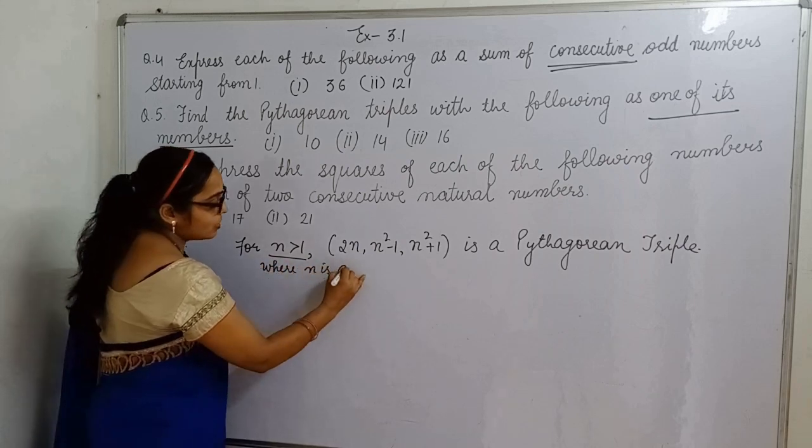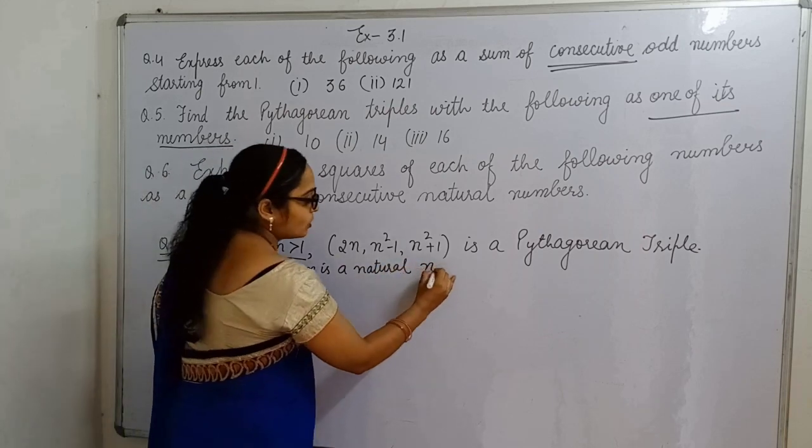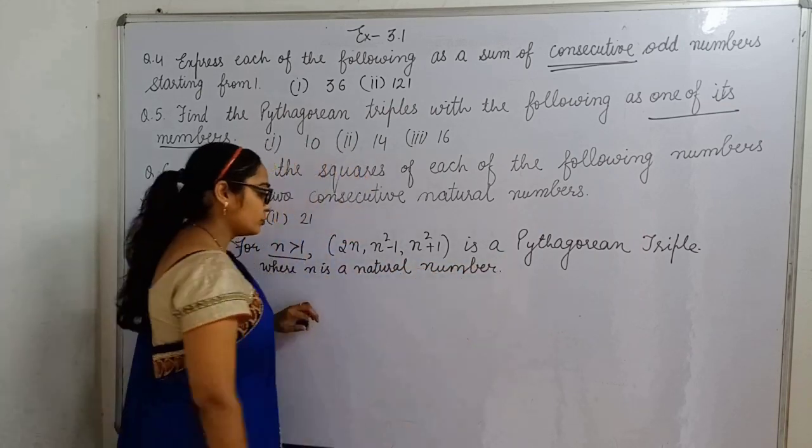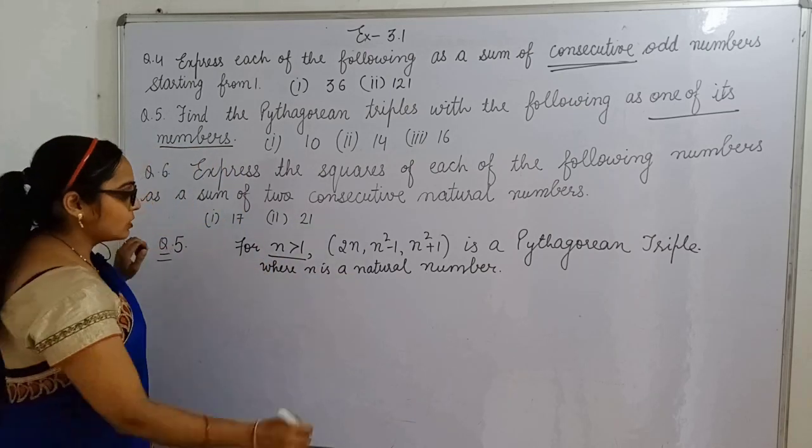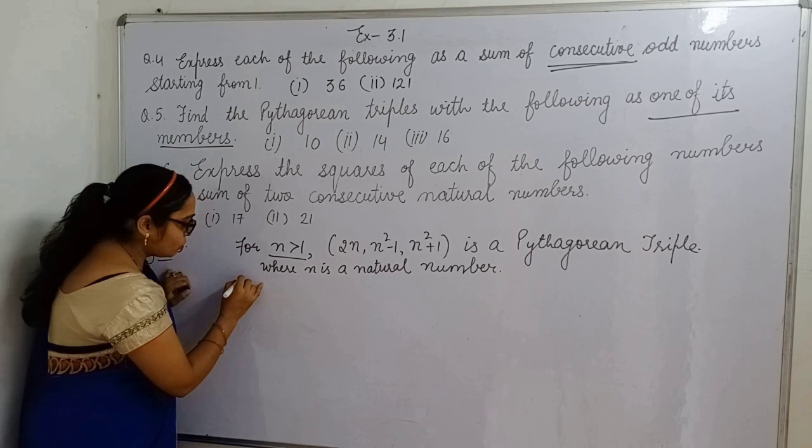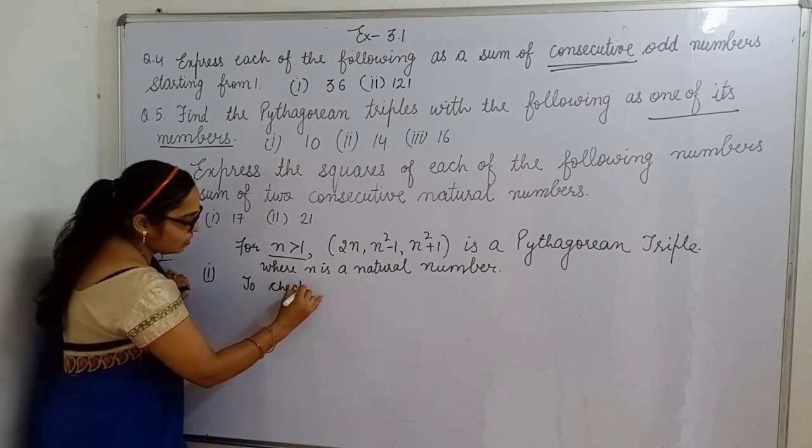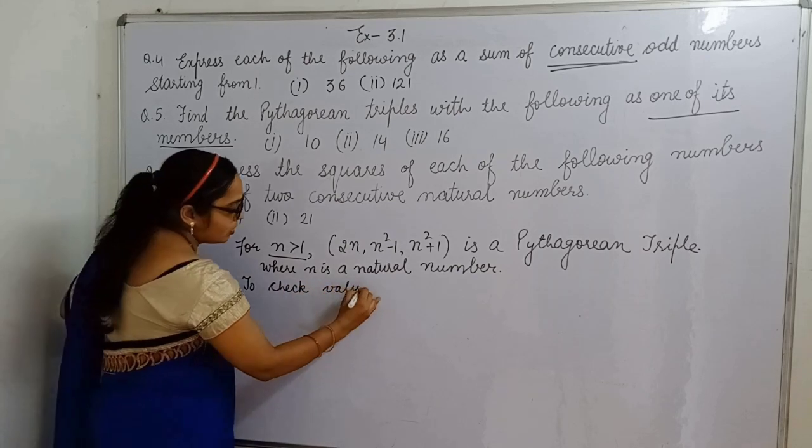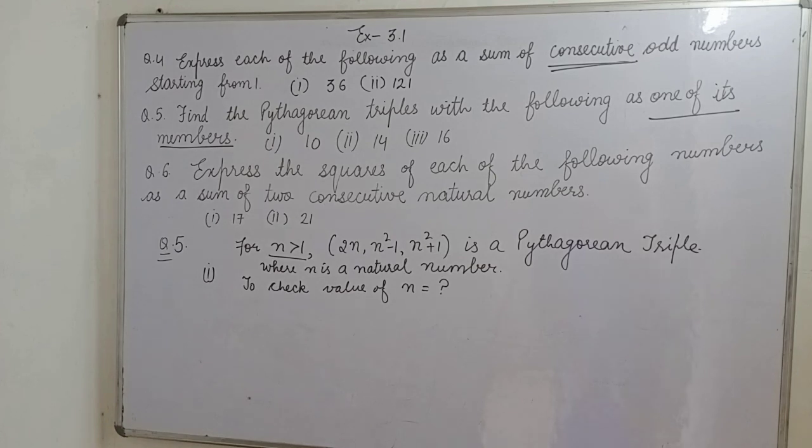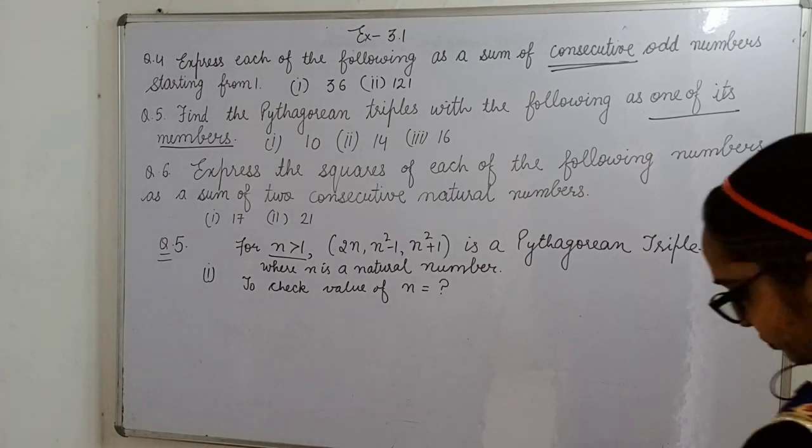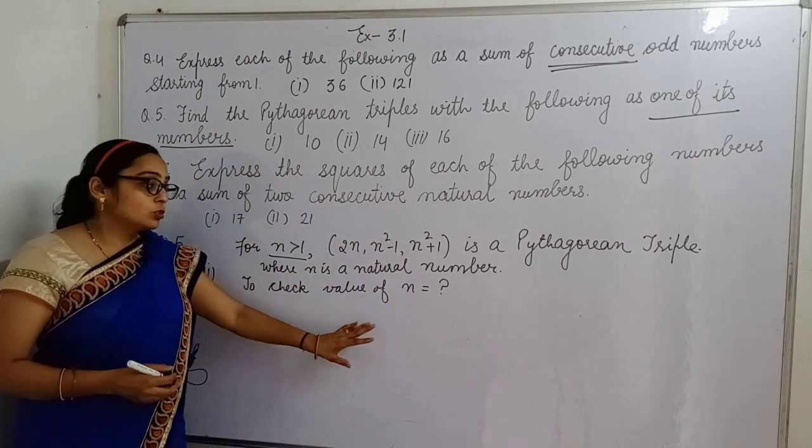n is a natural number. Natural number, you know, which one is greater than one. But, the natural number is greater than one. So, here we put 2n to check. First part, now to check value of n.